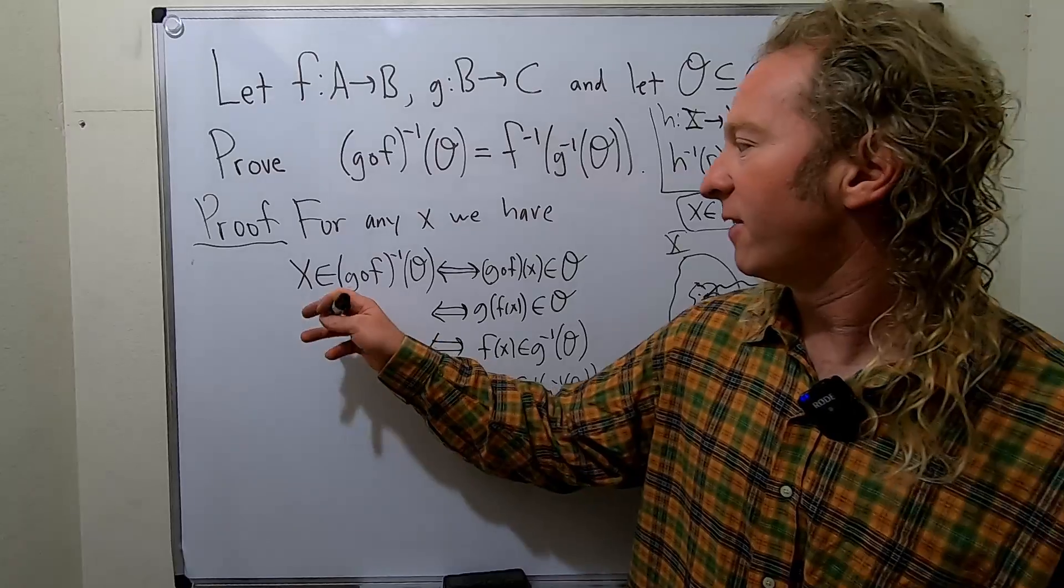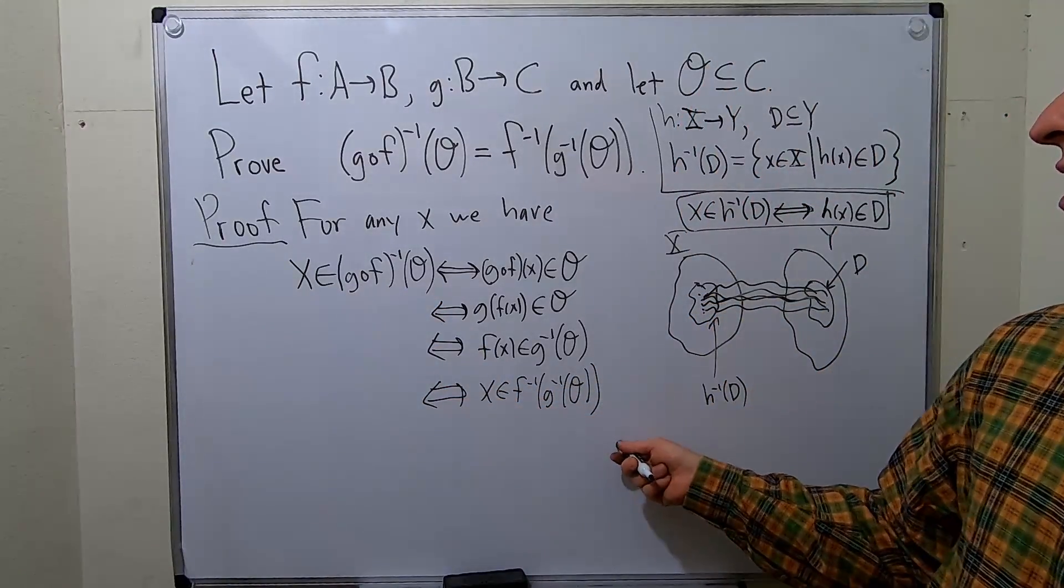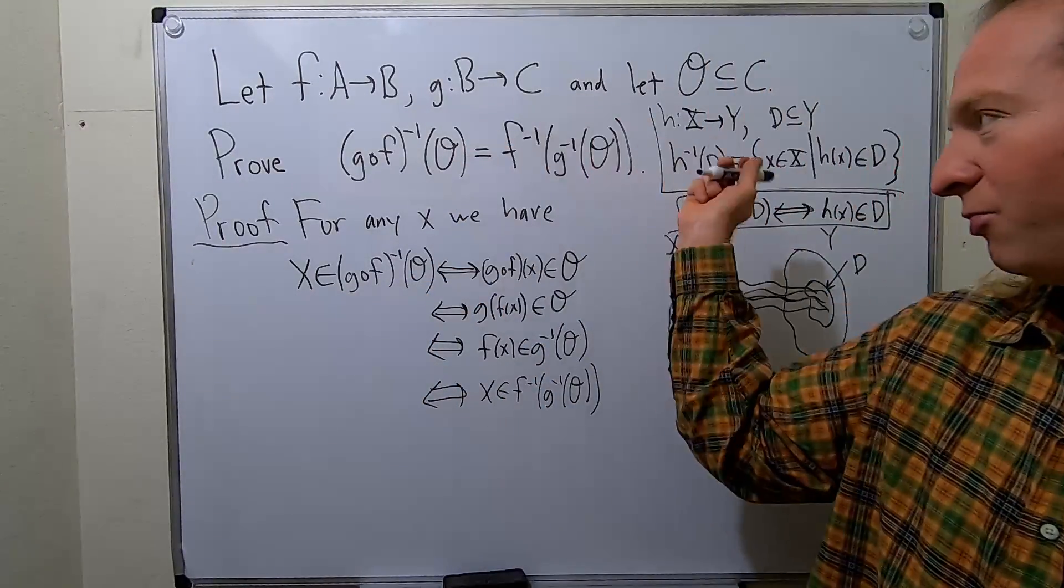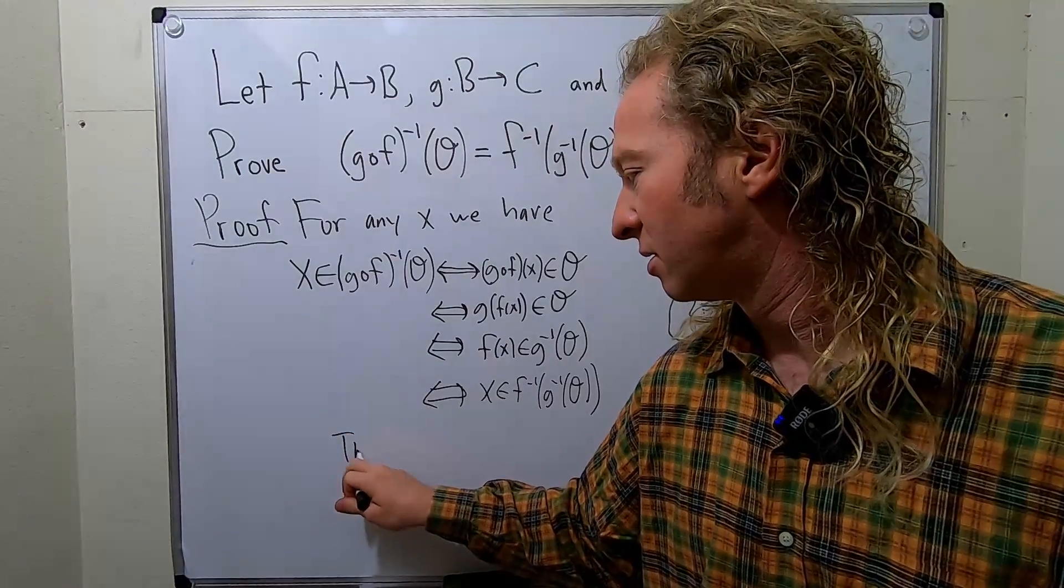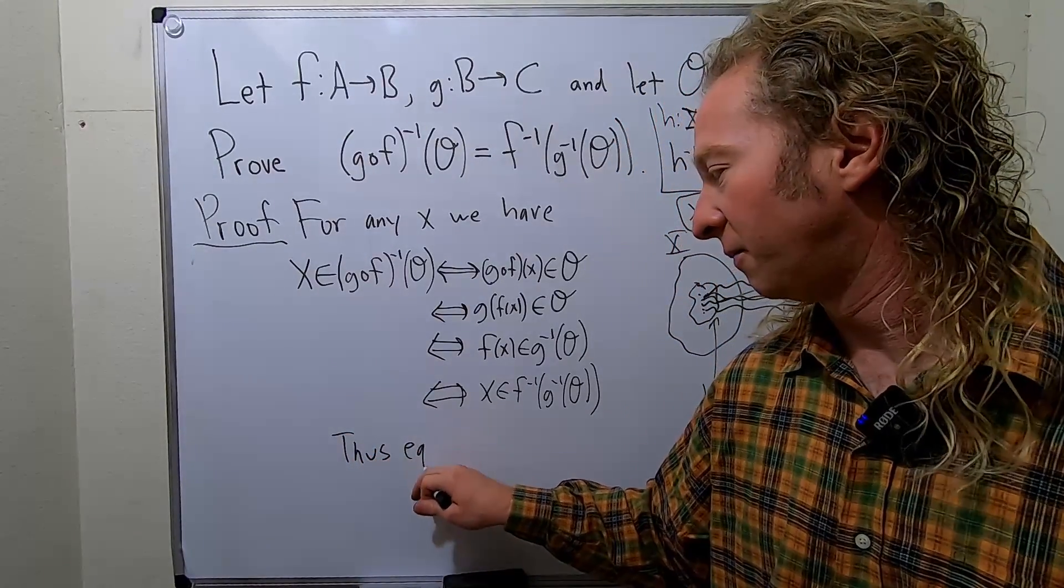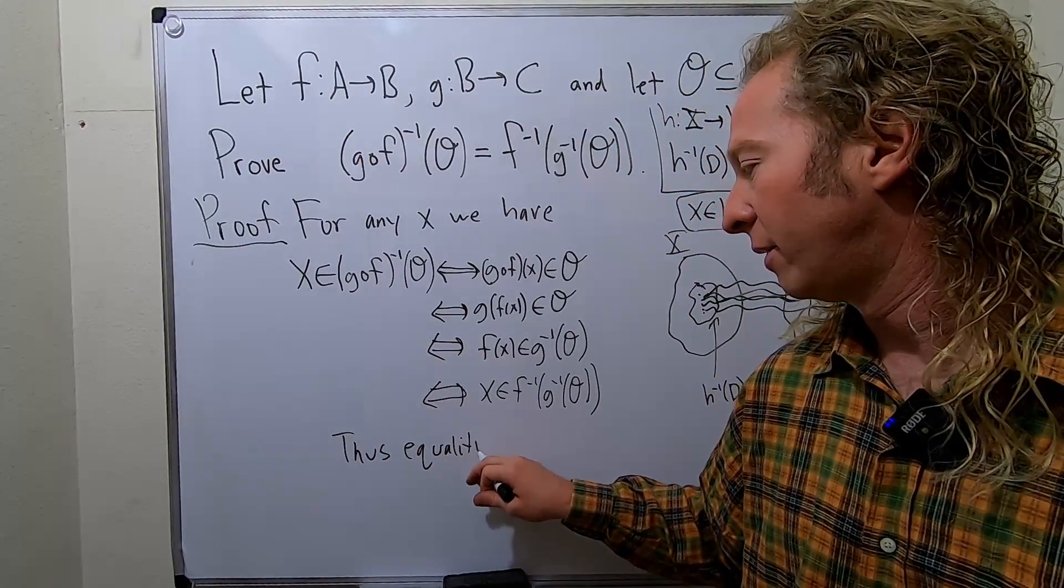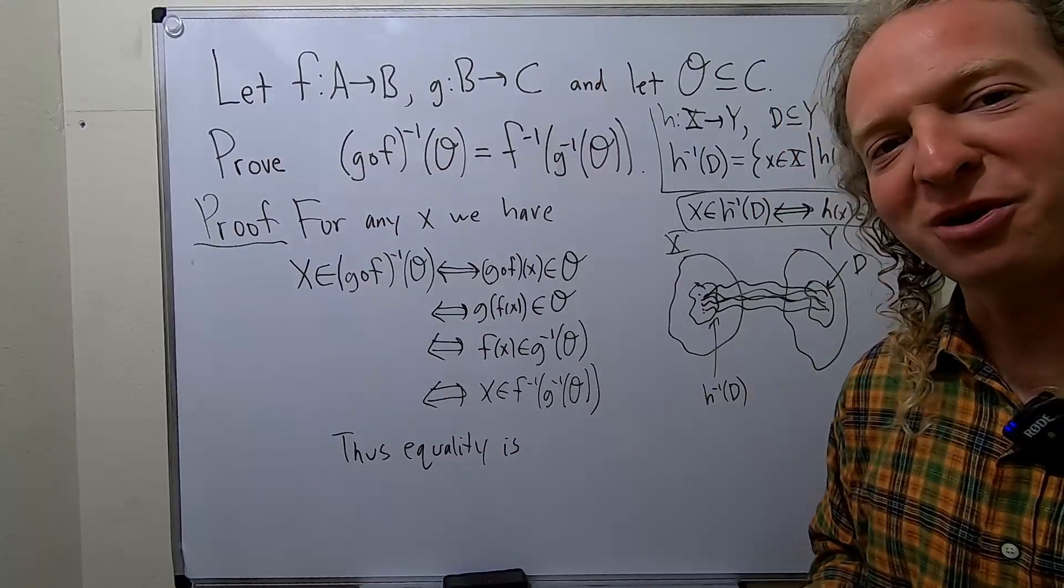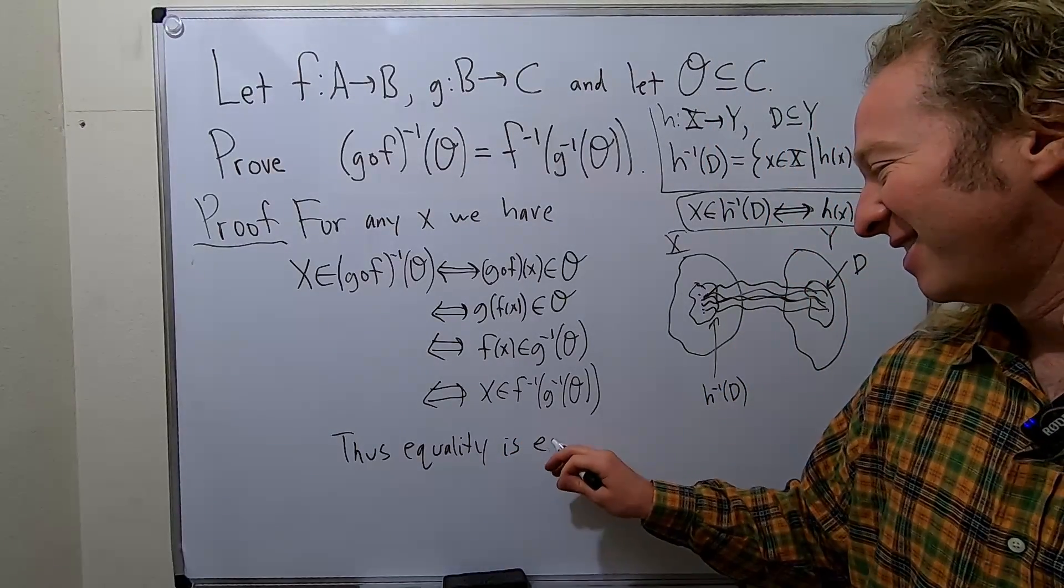So we have that if X is in this set, X is in this set. And it goes both ways. So the sets must be equal. So thus, equality is, this is a fun word, established. Established.